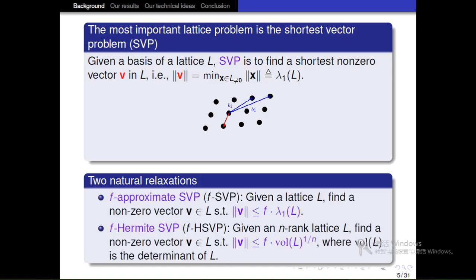There are two natural relaxations of SVP: γ-approximate SVP and γ-Hermite SVP, called γ-SVP and γ-HSVP for short. Given lattice L, γ-SVP asks us to find a nonzero vector v in L such that the norm of v is less than γ times lambda 1 of L. γ-HSVP asks us to find a nonzero vector v such that the norm of v is less than γ times det(L) to the 1 over n.